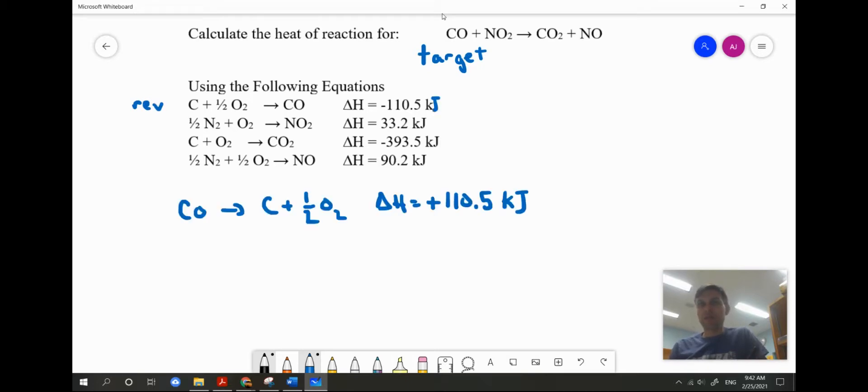As we've learned, the delta H value for the reverse of a chemical reaction is the same numerical value, but the sign is reversed. So I've gone from negative 110.5 to positive 110.5. So I've dealt with carbon monoxide.